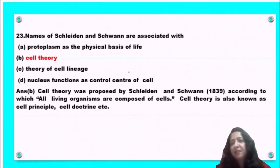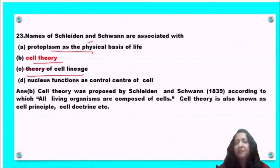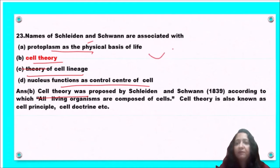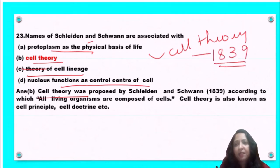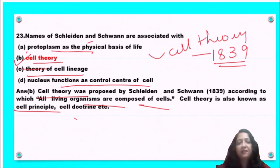Next question: the names Schleiden and Schwann are associated with protoplasm as physical basis of life, cell theory, theory of cell lineages, or nucleus function as control center of the cell? Schleiden and Schwann are associated with the cell theory, which they proposed in 1839. According to this theory, all living organisms are composed of cells derived from pre-existing cells. Cell theory is also known as the cell principle. So option B, cell theory, is the correct answer.